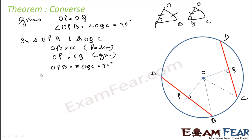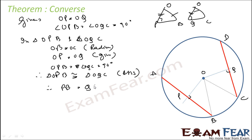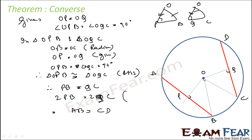Therefore these triangles are congruent by RHS. Since they are congruent, therefore PB is equal to QC. Now, PB is equal to QC, so twice of PB equals twice of QC. Twice of PB is AB, and twice of QC is CD.